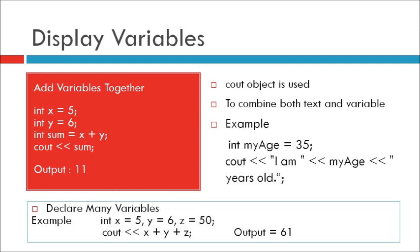Declare many variables. To declare more than one variable of the same type, use a comma. For example, integer x equals 5 comma y equals 6 comma z equals 50, cout x plus y plus z. Output of this program is 61.